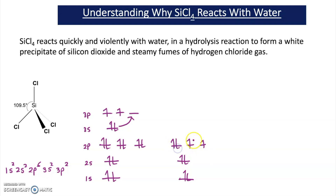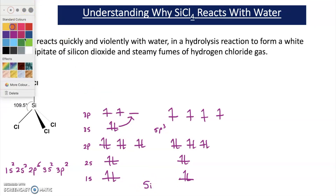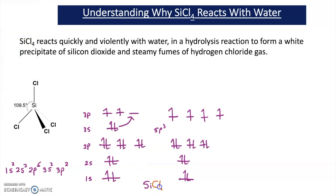To get round this, silicon rearranges its electrons to allow it to have 4 bonds. It does this by promoting one of the 3s electrons up to the empty 3p orbital. This creates 4 orbitals all the same energy, and we call these sp3 orbitals. If I put in chlorine's electrons — represented in a different colour — these new orbitals are filled with silicon's and chlorine's electrons.